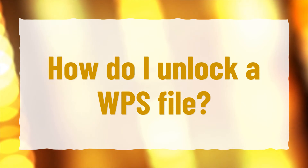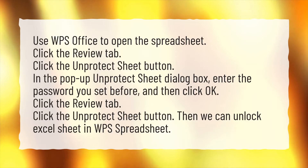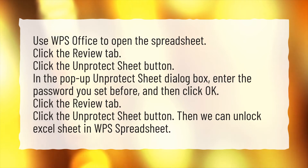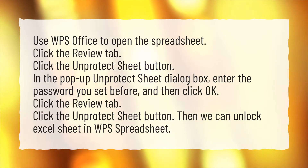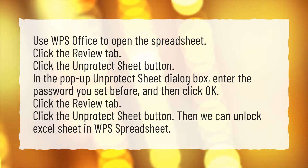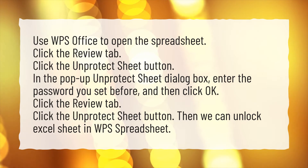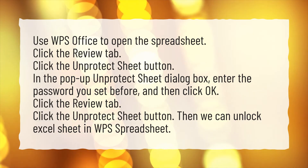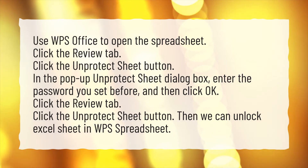How do I Unlock a WPS File? Use WPS Office to open the spreadsheet. Click the Review tab, then click the Unprotect Sheet button. In the pop-up Unprotect Sheet dialog box, enter the password you set before and click OK. Then we can unlock the Excel sheet in WPS Spreadsheet.